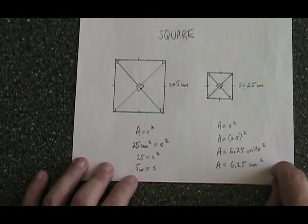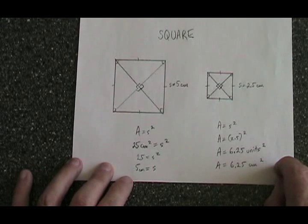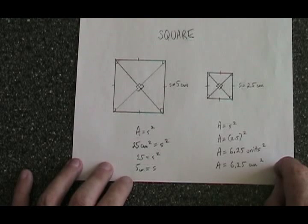There are only two variables in the formula for the area of the square: A and s. If you know one, you can find the other.